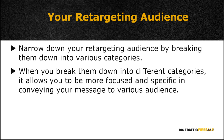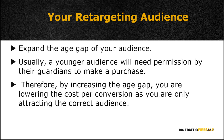The third step is to narrow down your retargeting audience by breaking them down into various categories instead of grouping them into a single entity. For instance, you may have audiences with different interests, age groups, and locations. When you break them down into different categories, it allows you to be more focused and specific in conveying your message to various audiences. Through this approach, it's possible to increase your audience engagement and improve your conversions from each audience category.